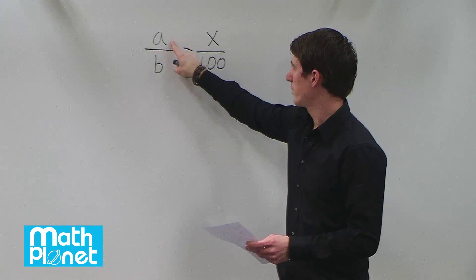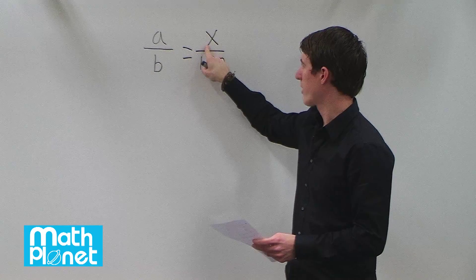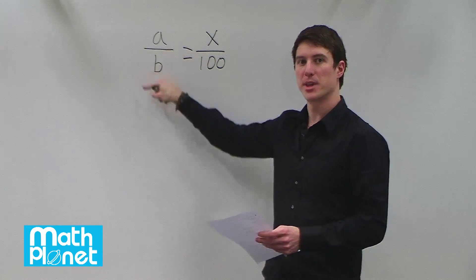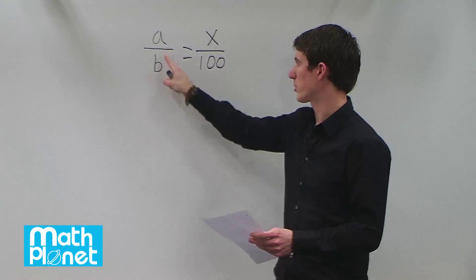So if we want to say 54 is 25% of what number, B is that number, so it's some larger number.